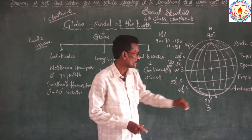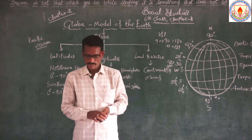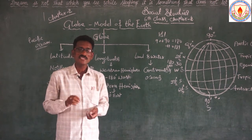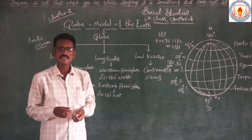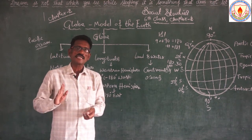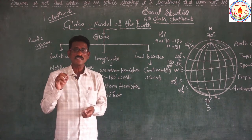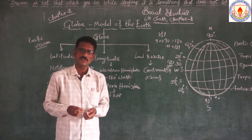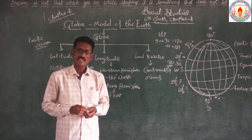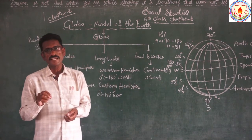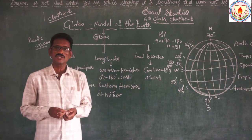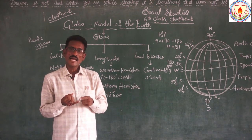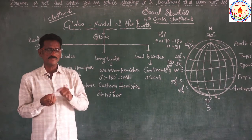The importance of the zero degrees longitude: it is also called the Greenwich longitude, or the Prime Meridian. Zero degrees longitude passes through Greenwich, which is located in London. In 1884, this zero degrees longitude was named the Prime Meridian.